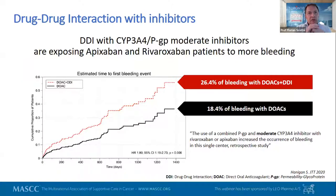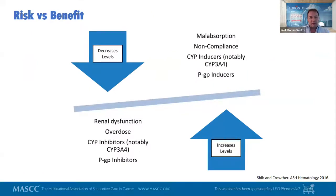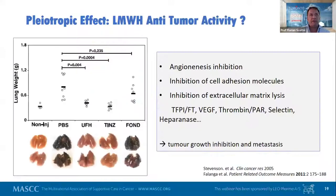Patients with inhibitors have an increased bleeding risk compared to those without. We must consider malabsorption, non-compliance, induction or inhibition, renal dysfunction, and potential overdose — all to decide the right treatment to prescribe to our patients.